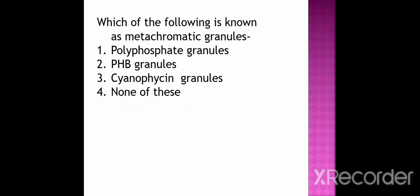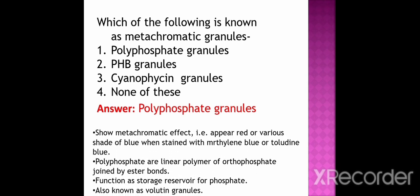Which of the following is known as metachromatic granules? Option 1 polyphosphate granules, option 2 PHB granules, option 3 cyanophycin granules, option 4 none of these. The correct option is polyphosphate granules. Polyphosphate granules are also known as metachromatic granules because they show a metachromatic effect — they appear red or various shades of blue when stained with methylene blue or toluidine blue. Polyphosphates are linear polymers of orthophosphate joined by ester bonds; they function as a storage reservoir for phosphate. These metachromatic granules are also known as volutin granules.